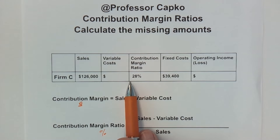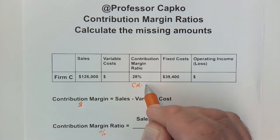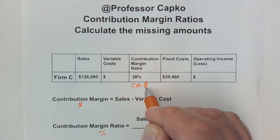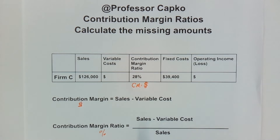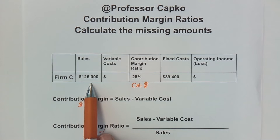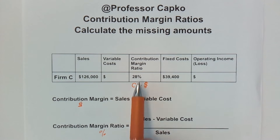The first thing we need to figure out is the variable costs. To do that, I'm going to first figure out what the contribution margin dollar figure is. We know the contribution margin ratio is 28%, which equals sales minus variable costs over sales. We know the sales but not the variable costs, so we can't use that formula directly.